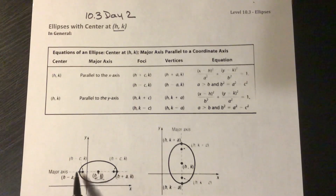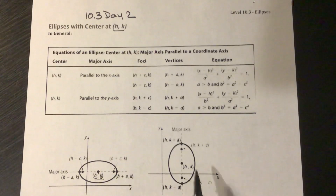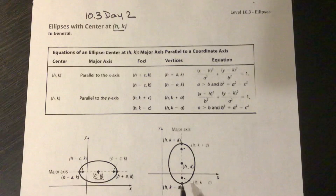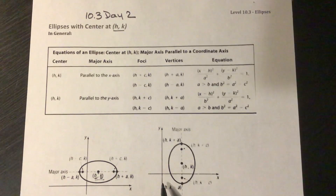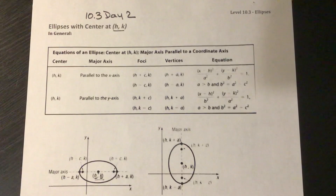Because this is the major axis, this is our a value — it's the bigger value, and it goes under the a part of the equation. On the other side, we have the tall ellipse, and the major axis is now parallel to the y-axis after you apply the shift. The big number, a squared, goes underneath the y part of the equation. The h and k values tell us where the center is.